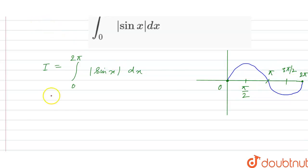So if we see, we can open this modulus in two intervals: from 0 to π this will be equal to plus sine x dx, because from 0 to π it is positive, and plus from π to 2π it will be minus sine x dx.